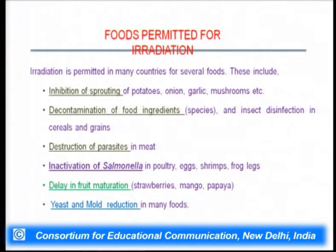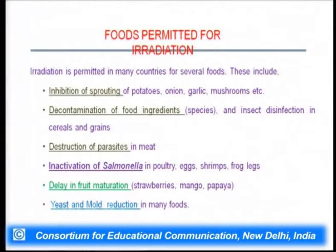What types of foods are permitted for irradiation? Irradiation is permitted in many countries for: inhibition of sprouting of potatoes, onion, garlic, and mushroom; decontamination of food ingredients and spices; insect disinfection of cereals and grains; destruction of parasites in meat; inactivation of Salmonella in poultry, eggs, shrimps, and frog legs; delay in fruit maturation in strawberries, mango, and papaya; and yeast and mold reduction in several foods.